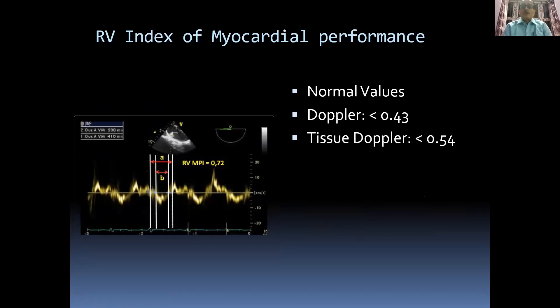The RV index of myocardial performance can also be calculated. Using Doppler, the normal value should be less than 0.43; using tissue Doppler, it should be less than 0.54.